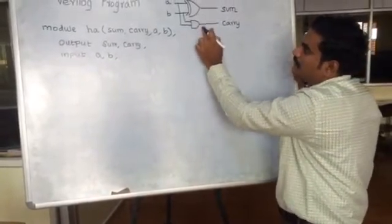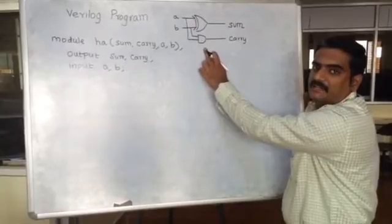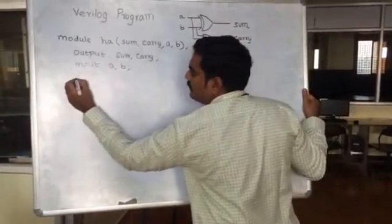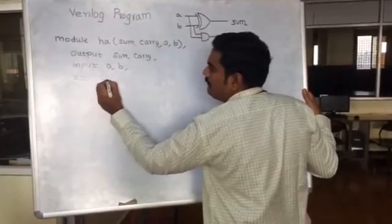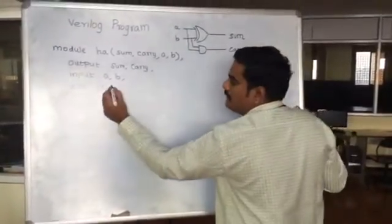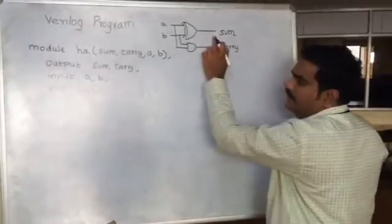The gates used in these blocks are XOR gate and AND gate. First I will write an XOR by employing a gate primitive. I will give an identifier name as G1. Within this we have to write the output of the gate.